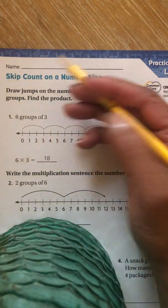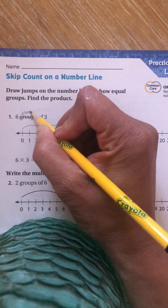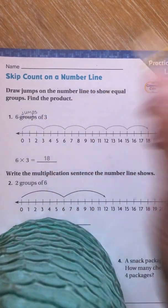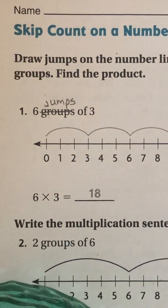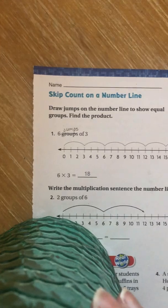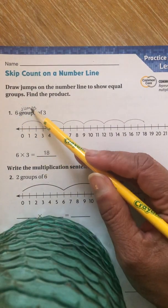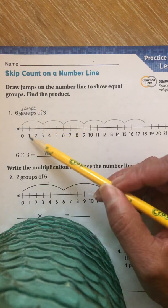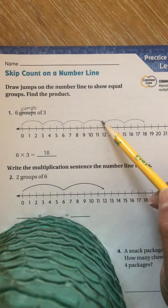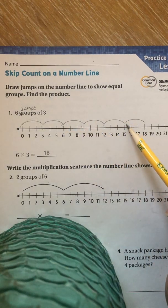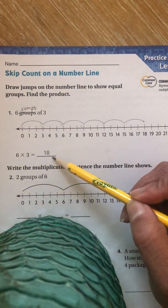So here you have six groups of three. Now remember, Ms. Harling likes to change that word to jumps because that is what we are doing. We are jumping on the number line. And you can see that they've already done that for you. They jumped six jumps and they skip counted by three. Three, six, nine, 12, 15, 18. So they gave you your answer. Six times three is 18.